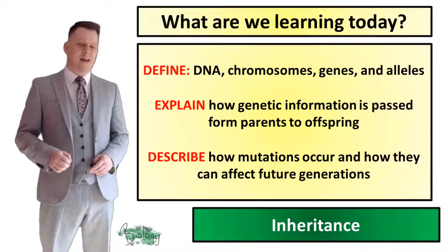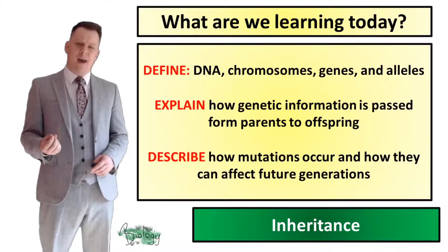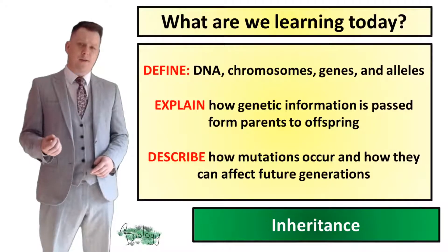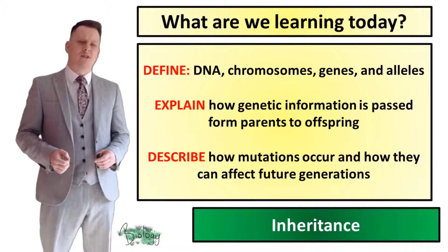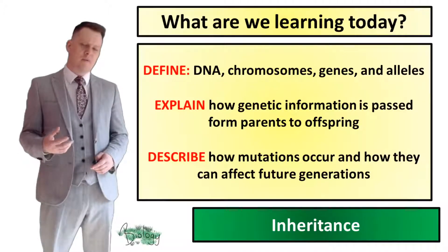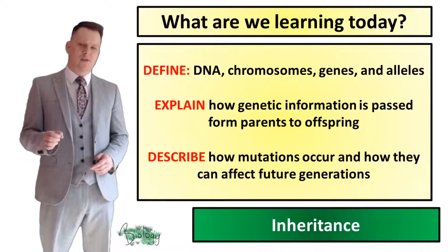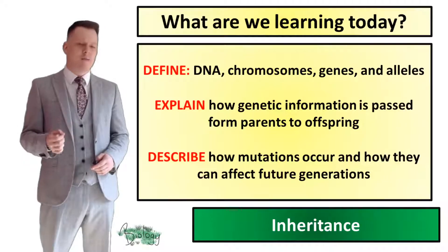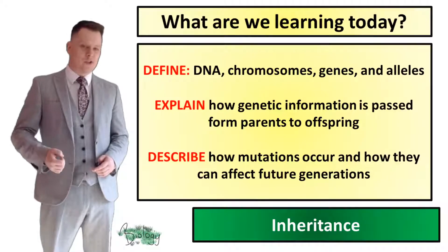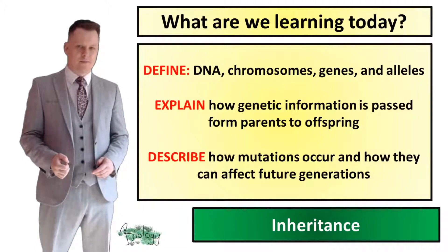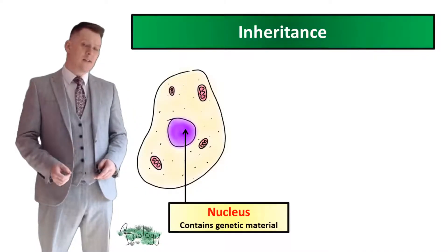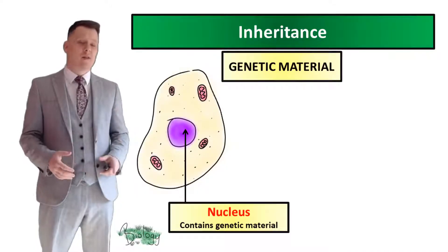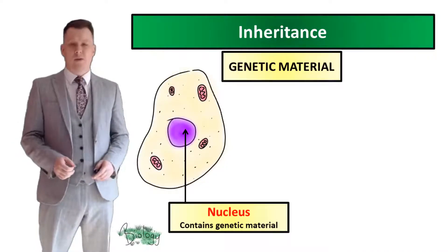In today's lesson we're going to be defining DNA, chromosomes, genes and alleles. We're going to explain how genetic information is passed from parents to offspring, and we're going to describe how mutations can occur and how they can affect future generations. Today's lesson is going to be focusing on the genetic material contained within the nucleus.